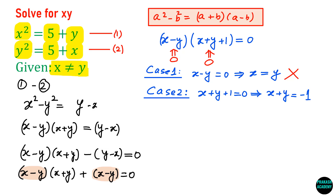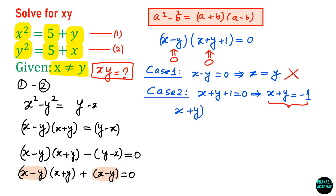Now, what we have to find is the value of x times y. The product xy can be obtained if we square the expression x plus y. So squaring x plus y equals negative 1 gives x squared plus y squared plus 2xy equals 1.